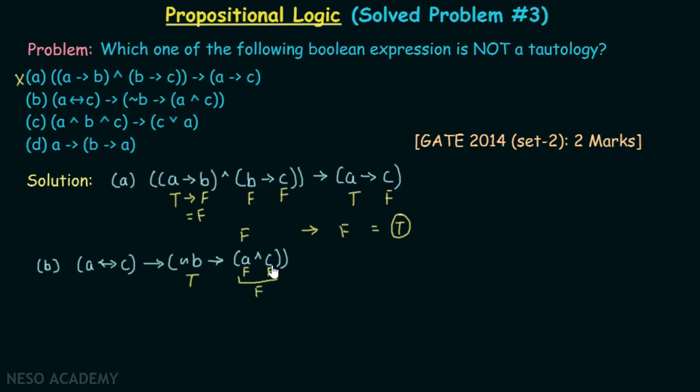As A is false and C is also false, A is false and C is also false. Now the result of this combination would be true. Isn't that so?